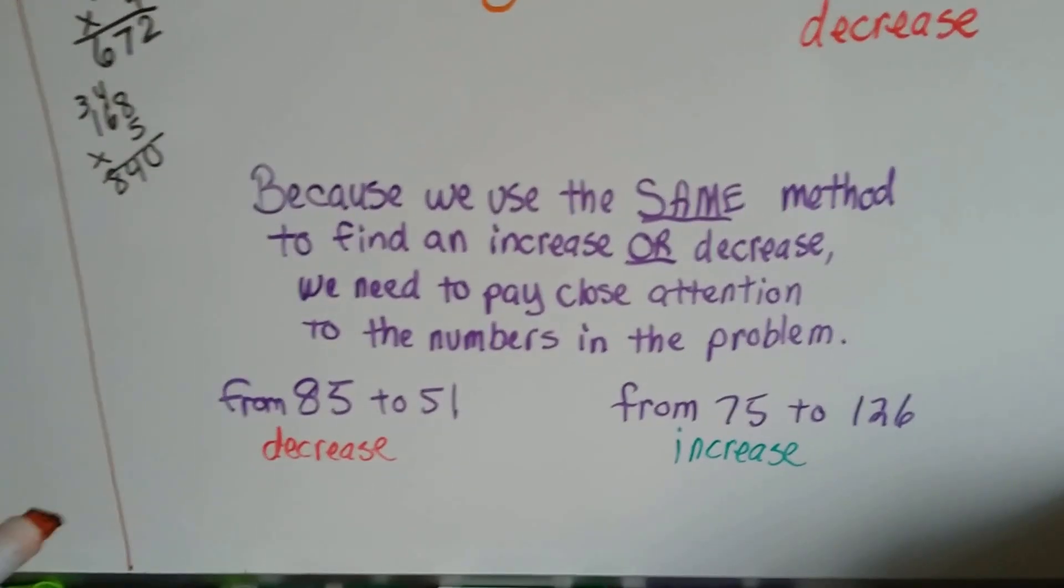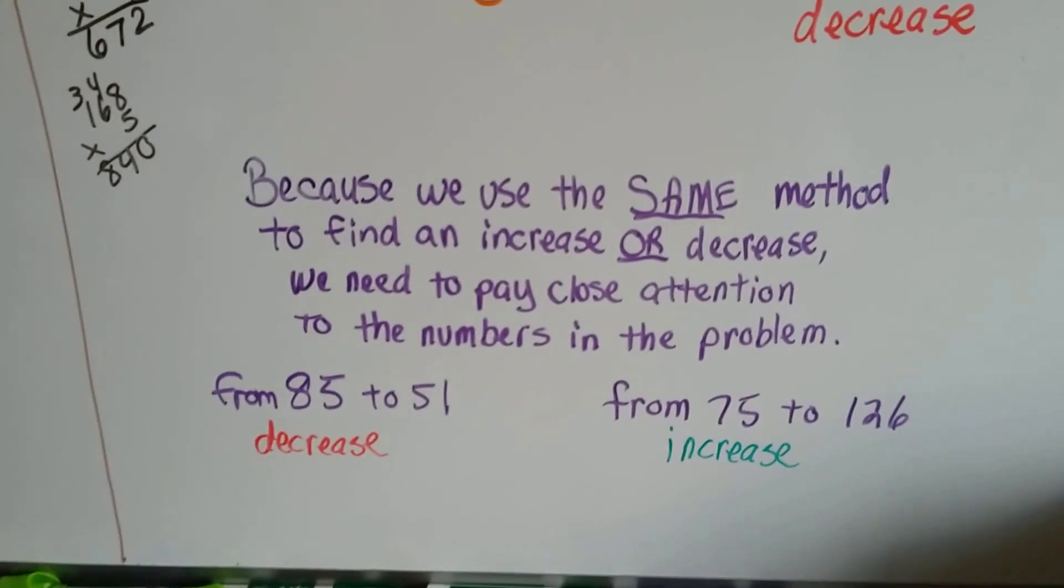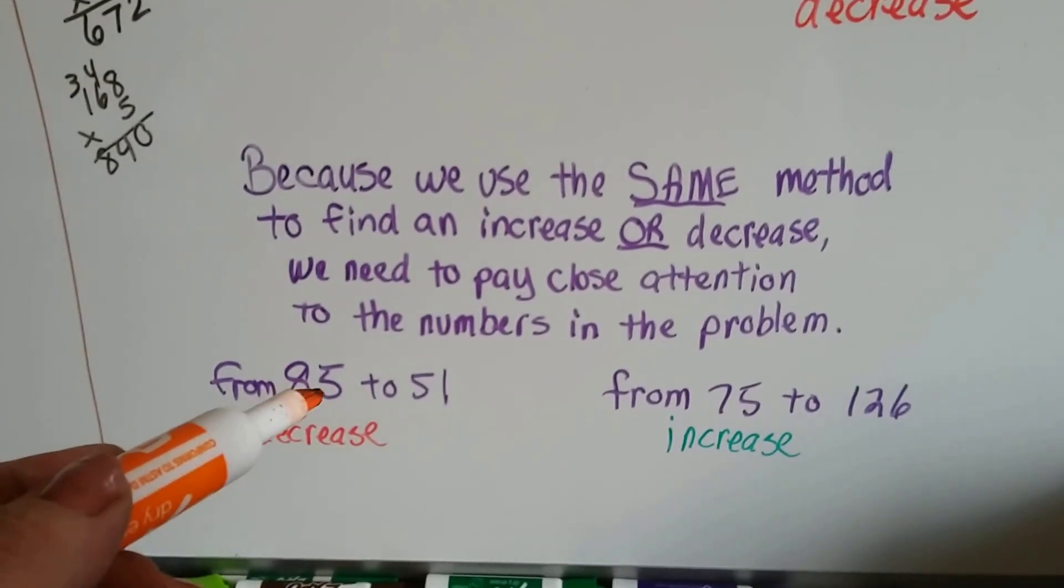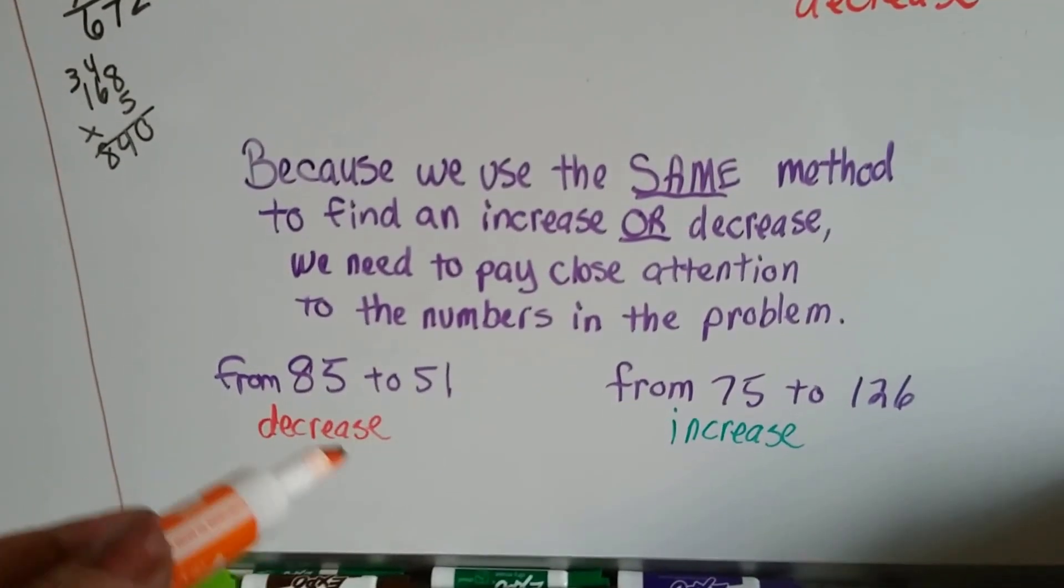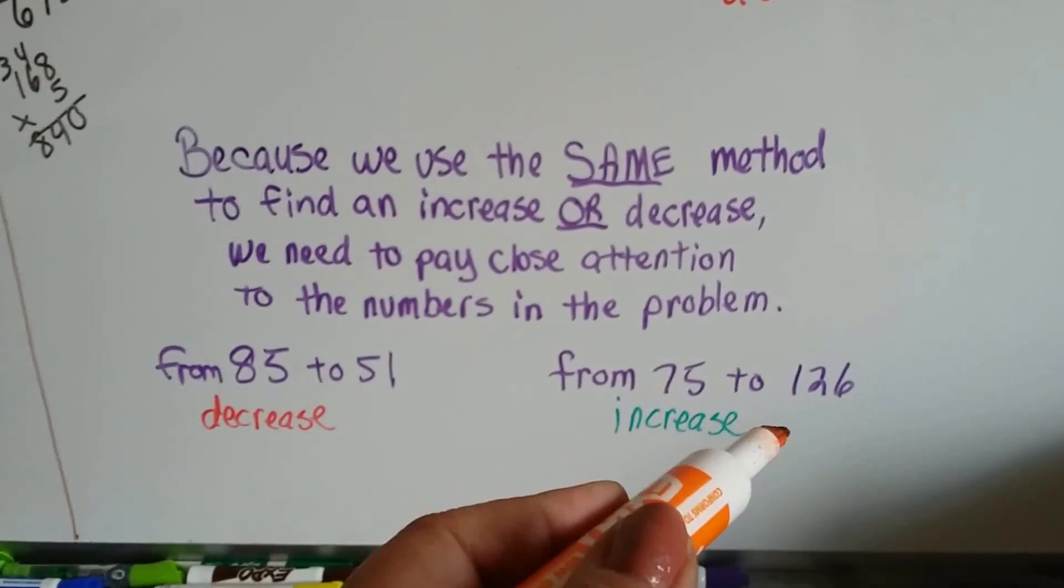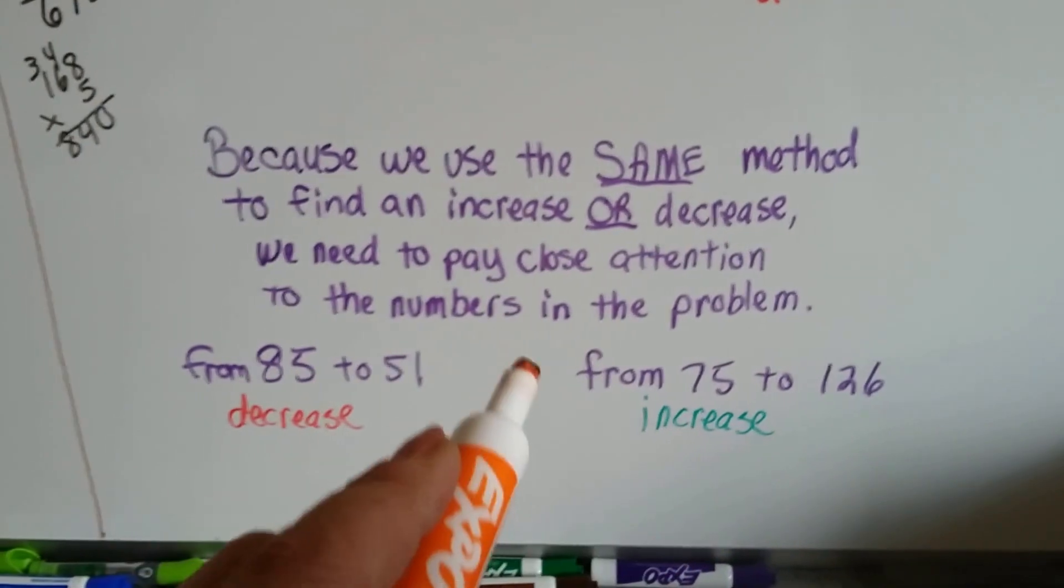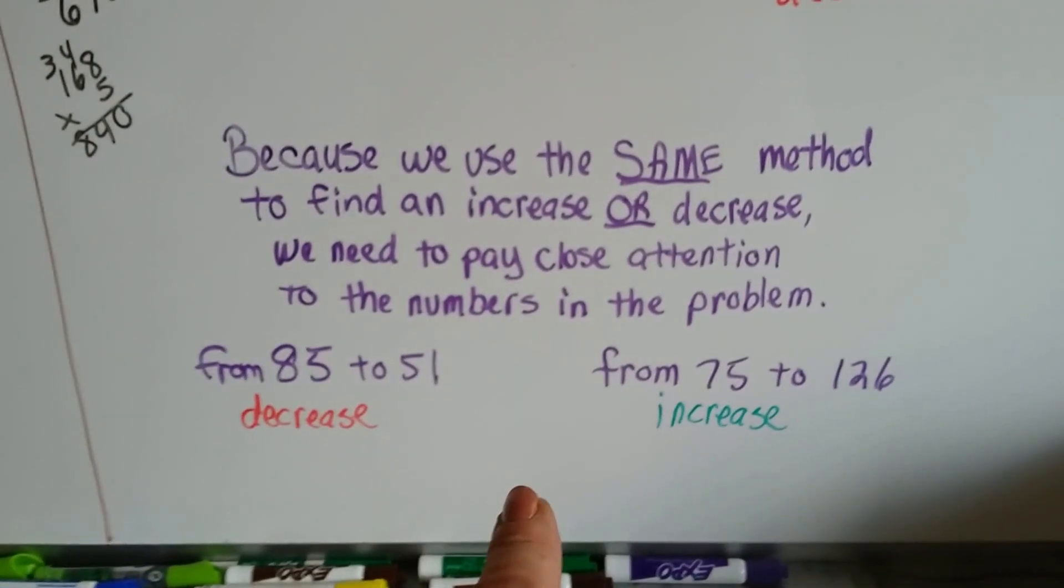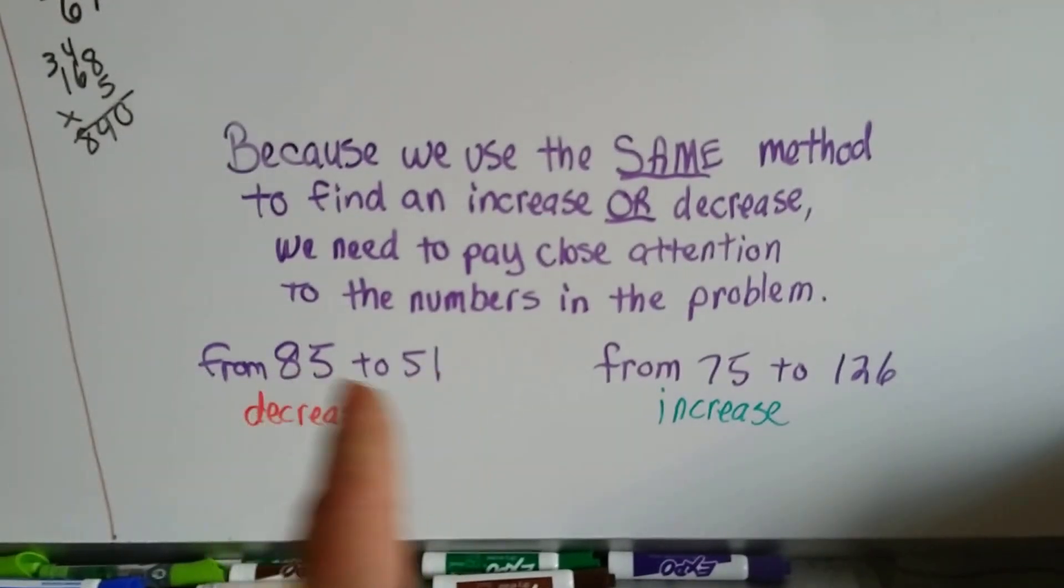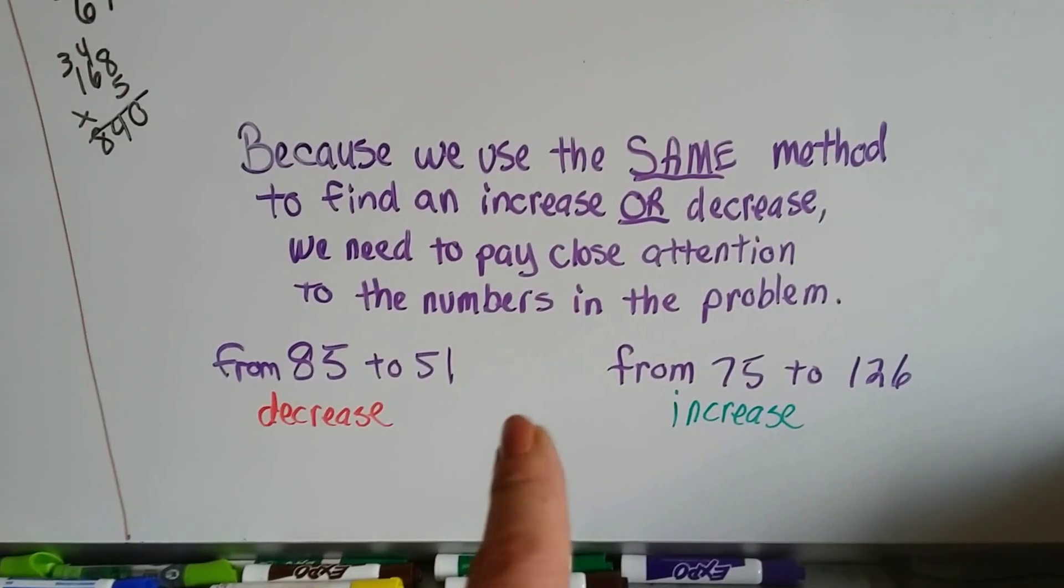So because we use that same method to find the increase or decrease, we need to pay close attention to the numbers in the problem. If you see 89 is going to 51, then we know it's a decrease in price. And if you see it's 75 going to 126, we know it's an increase in price. You could get caught up on that in a math problem. It'll say, is it an increase or decrease? So just look at which way the numbers are going. Are they getting bigger or are they getting littler?